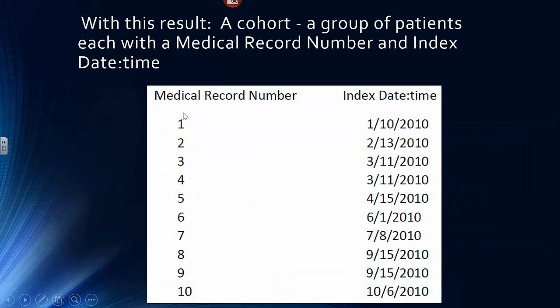Remember, at the end of the day, what you have is going to be a list of MRNs — the medical record numbers — and a list of associated indexed date-times from which this analysis will measure time going forward. In addition, the actual event represented by this indexed date-time is the event whose attributes will be available to you to analyze later.